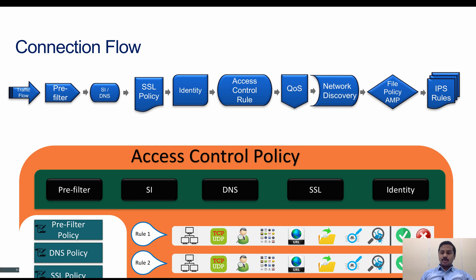Then the traffic moves on to the next component, which is file policy and AMP inspection, where it tries to detect a file within the traffic. If it detects one, based on the file type or file reputation, that file is either allowed to pass through or it gets dropped. The last component is the IPS rule, where the allowed traffic is inspected based on IPS rules, and based on the verdict, the traffic will either be allowed or dropped at the IPS signature level.